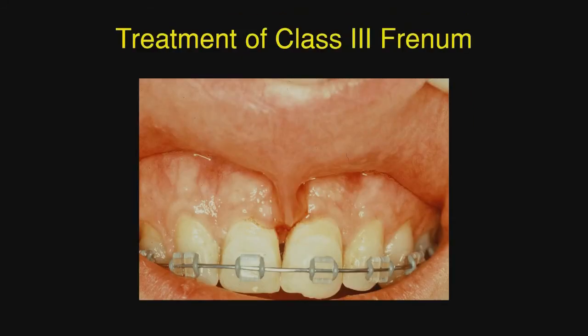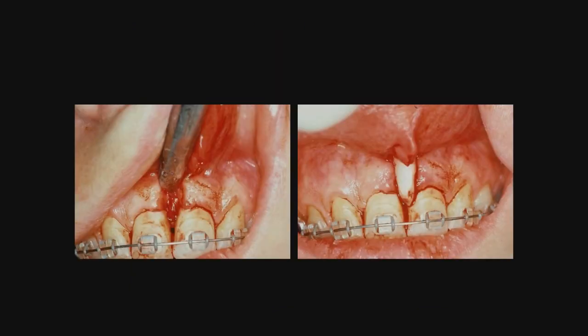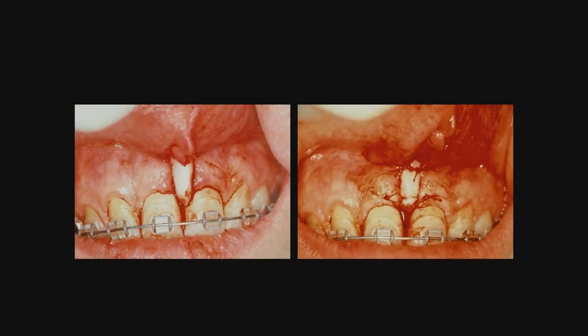Treatment of the Class 3 frenum. Here you will see the papilla is completely missing. From the bulk of the frenum, when that is removed, that's going to leave a deep concavity, which will be very unesthetic. What we did here was take a free gingival graft from the crest of the ridge and inlay it in that concavity so that we will have convex tissue across the facial rather than concave. We will then suture that in place and also suture where we removed the frenum in the apical area.